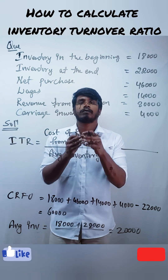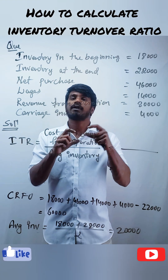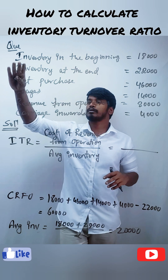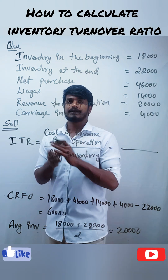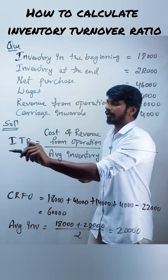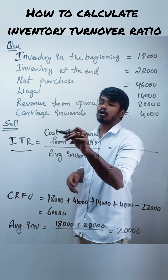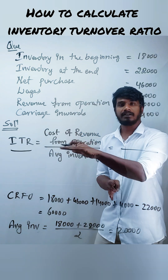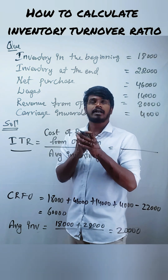Hello everyone, in this video we will learn to calculate inventory turnover ratio. So this is the given question. Let us see the formula: inventory turnover ratio is equal to cost of revenue from operations divided by average inventory.